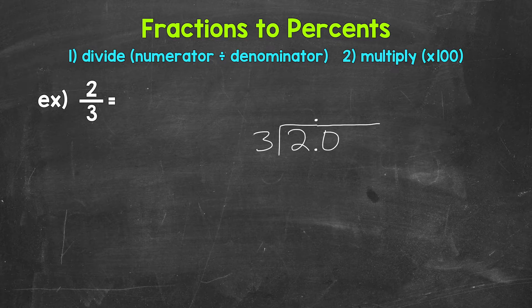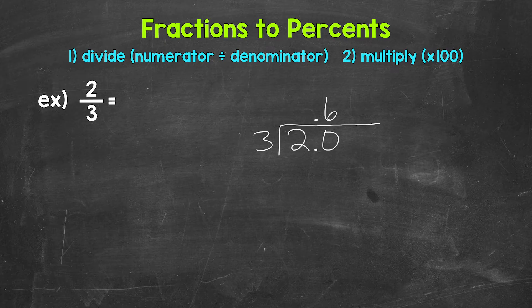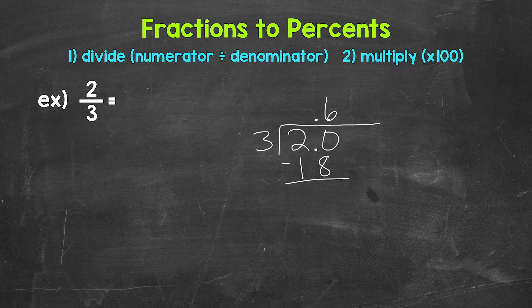And now we can think of this as 20 divided by three. How many threes in 20? Well, six, that gets us to 18. We need to put the six above the zero since we used that zero and thought of this as 20. This will line us up correctly. Now we multiply six times three is 18, subtract 20 minus 18 is two.